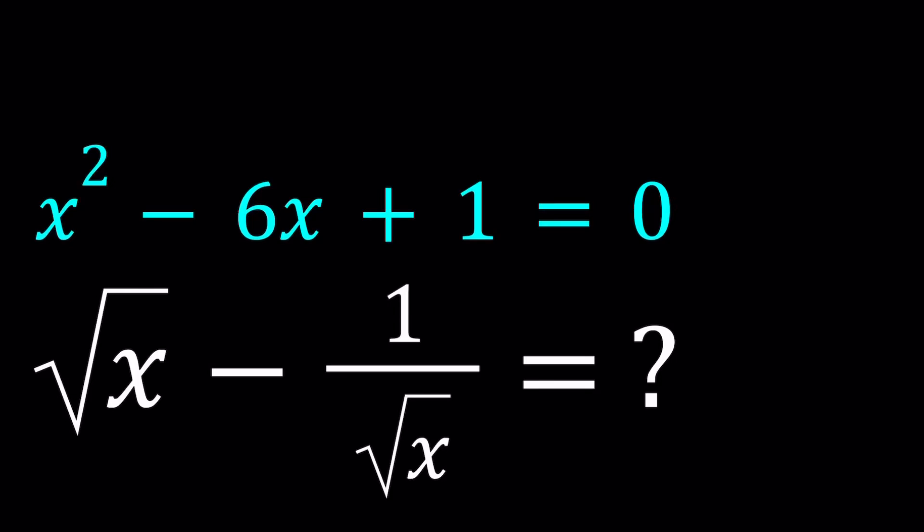Hello everyone. In this video, we're going to be evaluating a radical expression based on a polynomial. We're given that x squared minus 6x plus 1 equals 0, and we're supposed to evaluate square root of x minus 1 over square root of x. So based on the values we get from the first equation, we're going to evaluate the second expression. I'll be presenting two methods and let's start with the first one.